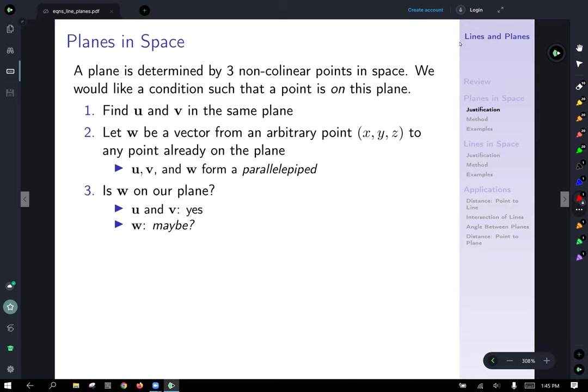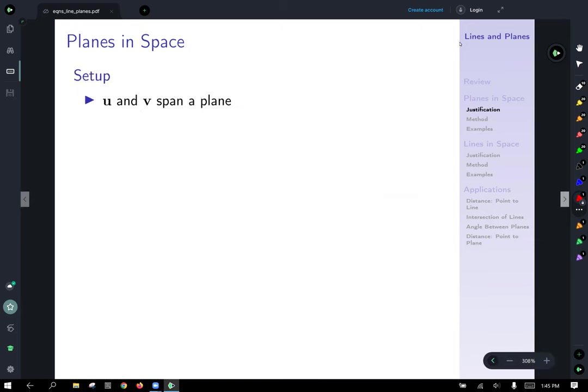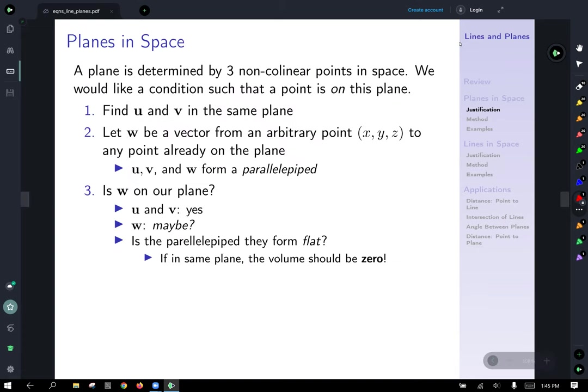Is w on our plane? u and v are necessarily on the plane. w might be. We don't know if it is or not. And the condition that we could use to guarantee that is, is the parallelepiped that they form flat? Well, if they're in the same plane, that would give us a flat parallelepiped and a flat three-dimensional object has volume zero.